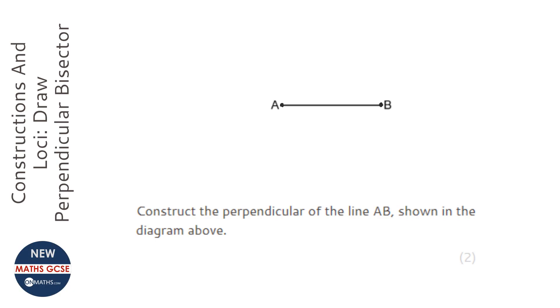You need to put the compass point at A and measure about three-quarters of the distance to B. It doesn't really matter, but it makes it easier if it's about three-quarters. If it's less than halfway, this won't work. You draw an arc from A like so.